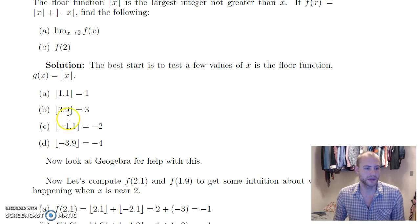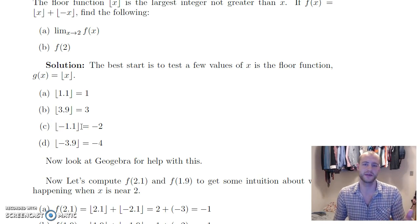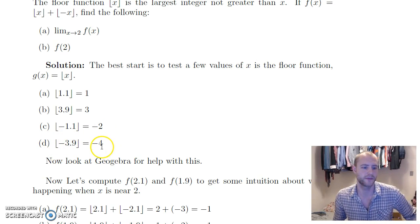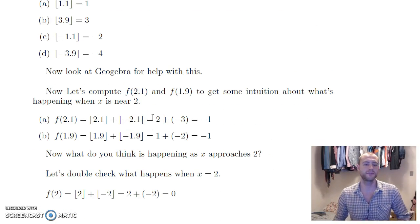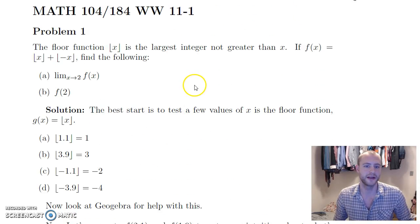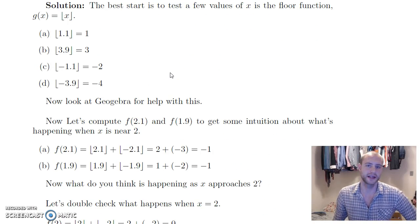I did a couple of examples: floor(1.1) is 1, because 1 is the integer to the left of 1.1. Floor(3.9) is 3. Floor(negative 1.1) — we're a little bit to the left of negative 1, so we go all the way to negative 2. And floor(negative 3.9) is negative 4. Now let's compute these values in our function f, which is floor of x plus floor of negative x. Let's test a few of those values — we'll try f(2.1) and f(1.9) to get some intuition about what's happening when x is near 2.